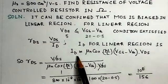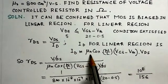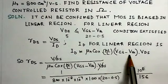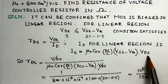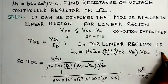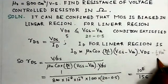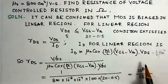ID is given by μn·Cox·(W/L)·(VGS - Vth)·VDS. The factor minus half VDS squared has been neglected here to simplify the calculations.